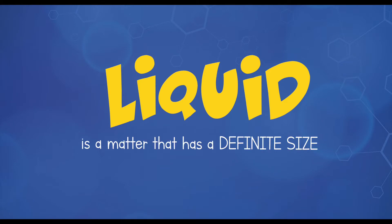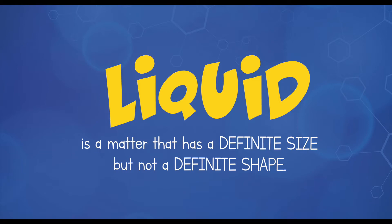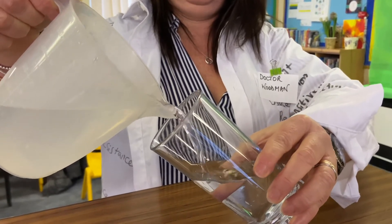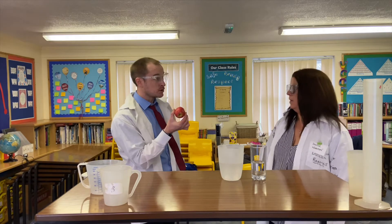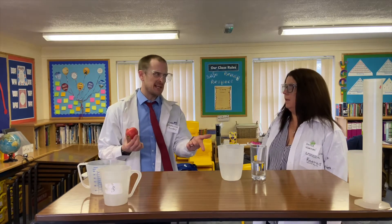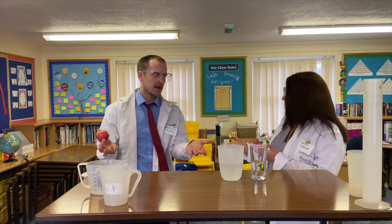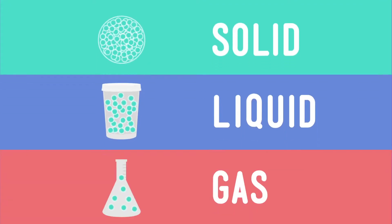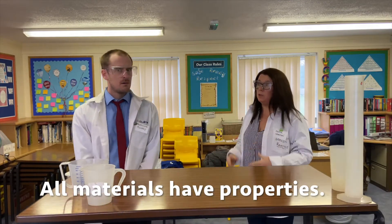Then we have liquid. Liquid has a definite size but not a definite shape — it can be poured into different shaped containers. So an apple can be apple shaped but water can't be water shaped. Exactly. And then we have gas which has no definite shape or size, like the air around you. More like the air around you.